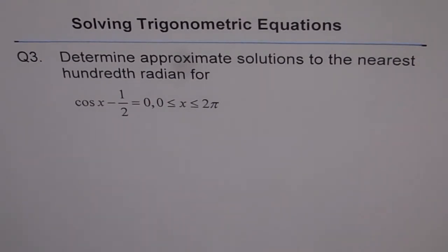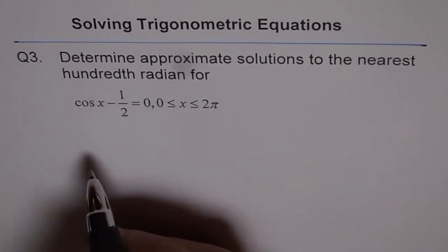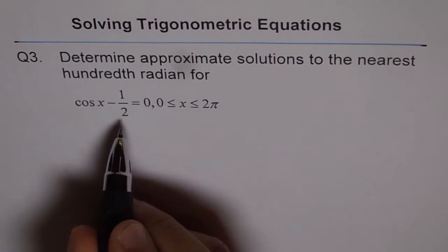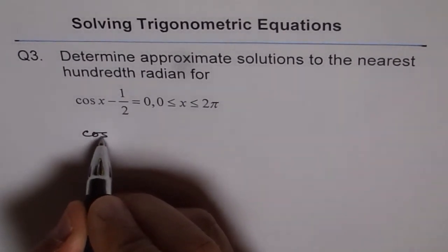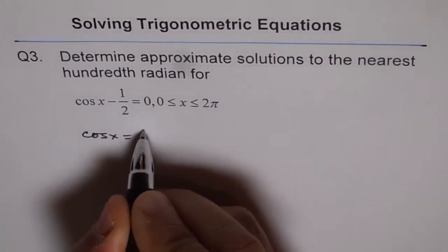Whenever you have this kind of question, approximate solutions means you need to use your calculator — your special triangles are not going to help you. When you look at the equation, you can rearrange it: cos x minus half equals 0 becomes cos x equals half.